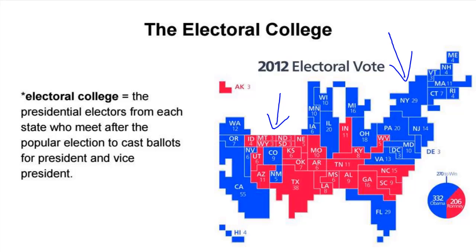California has 53 congressional districts. Based on the latest census, both New York and California are actually going to lose some seats. Texas has 36 congressional districts — that number is going to go up — and adding their two senators, they are worth 38 electoral votes.